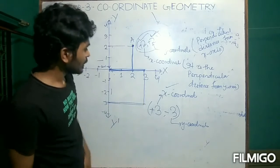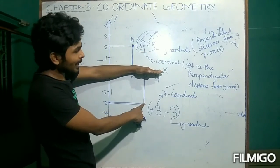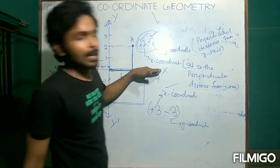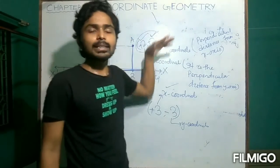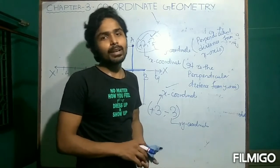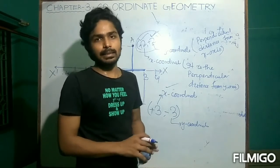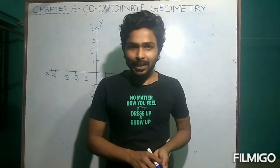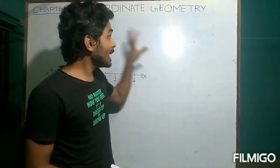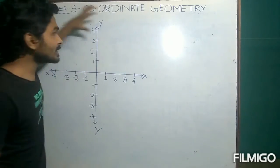So to clarify: the x-coordinate is the perpendicular distance from the y-axis, and the y-coordinate is the perpendicular distance from the x-axis. Now you are clear about what the x-coordinate and y-coordinate are. This is the basic difference between them. We can now easily identify which is which for any given point in the Cartesian coordinate system.